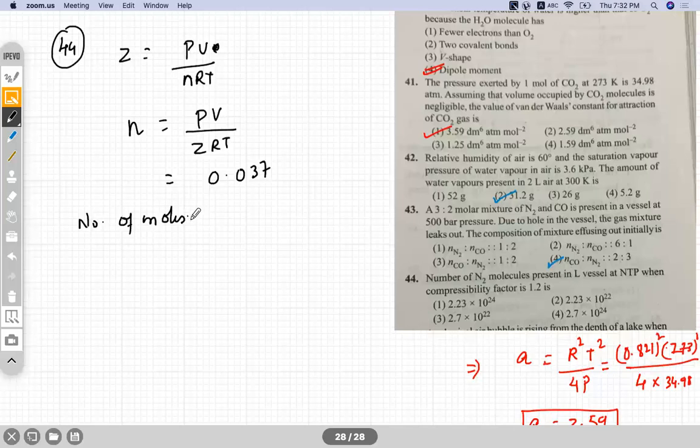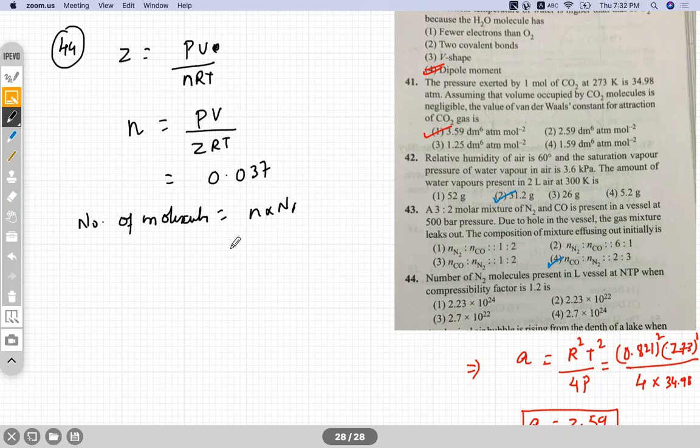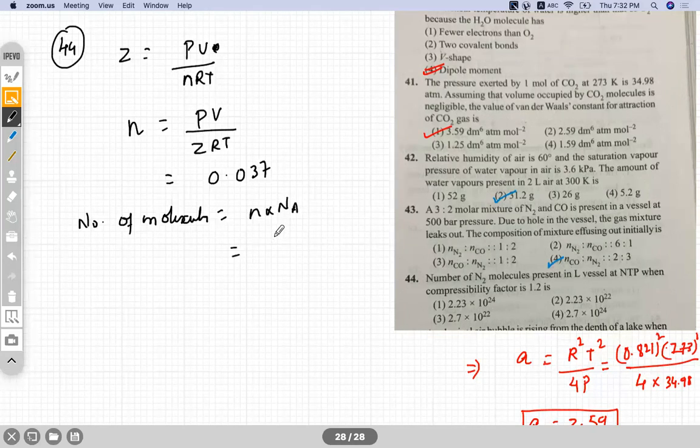So number of molecules would be number of moles into NA, that is N into NA, which is 2.23 into 10 to the power 22. Option B is correct here. Any doubt in this?